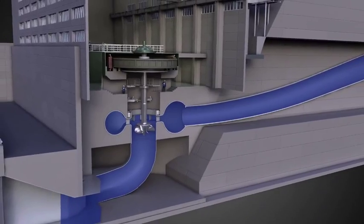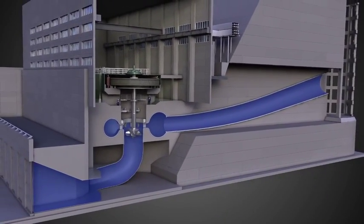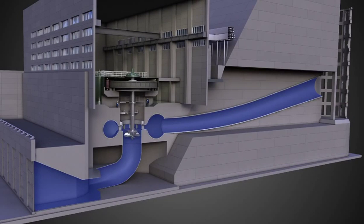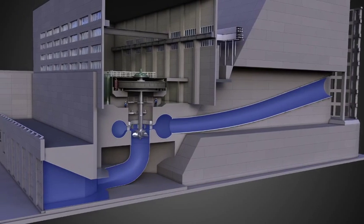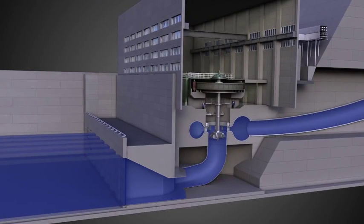As the shaft turns, it causes the generator to rotate, producing electricity. After flowing through the penstock and across the turbine, the water continues into the river on the other side of the dam.